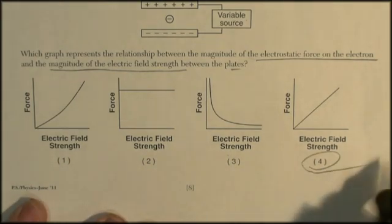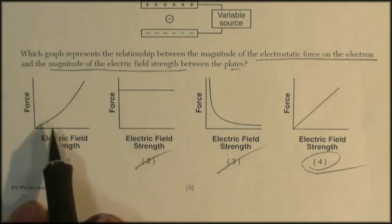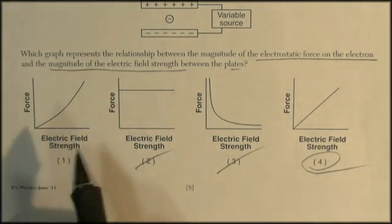And the answer to that is going to be choice 4. It can't be 3. It can't be 2. 1 looks like it could be, except it's curving, which means it's not a direct relationship.